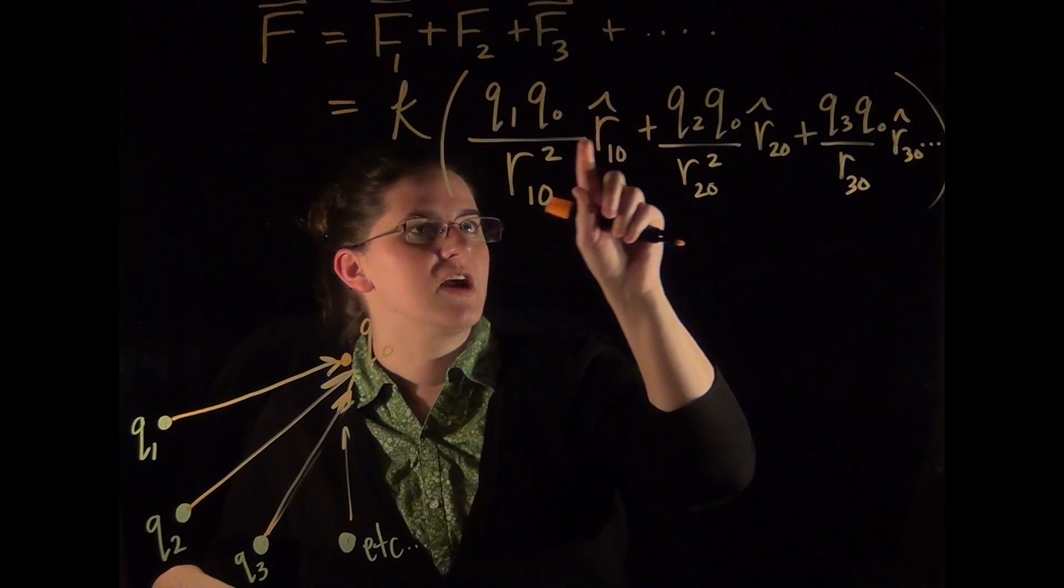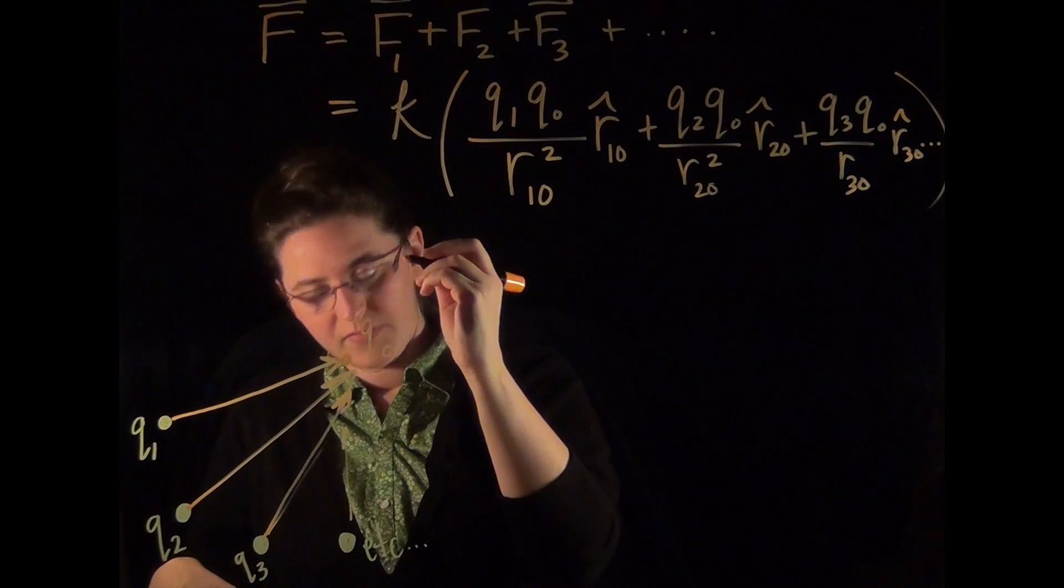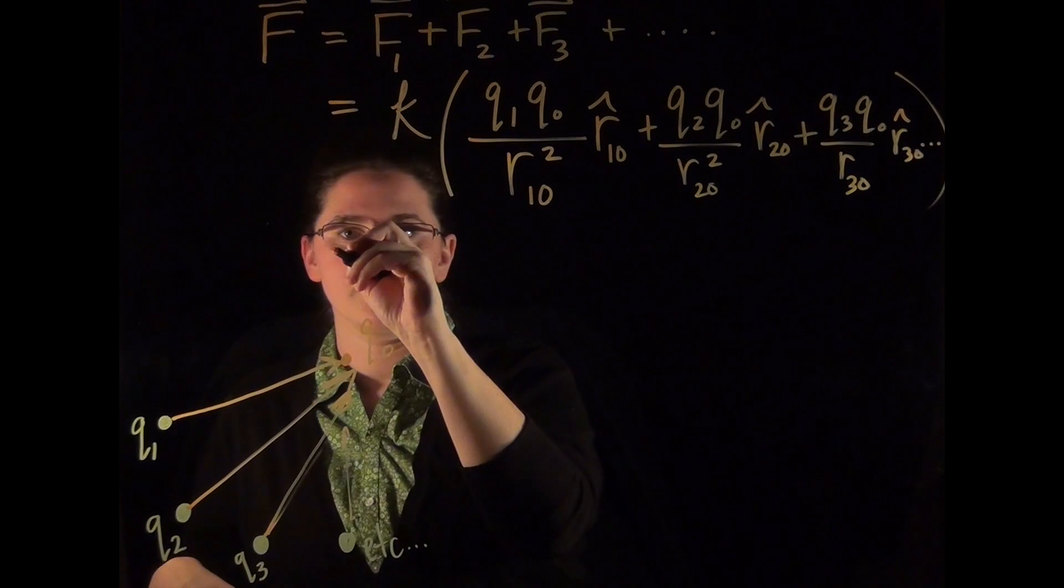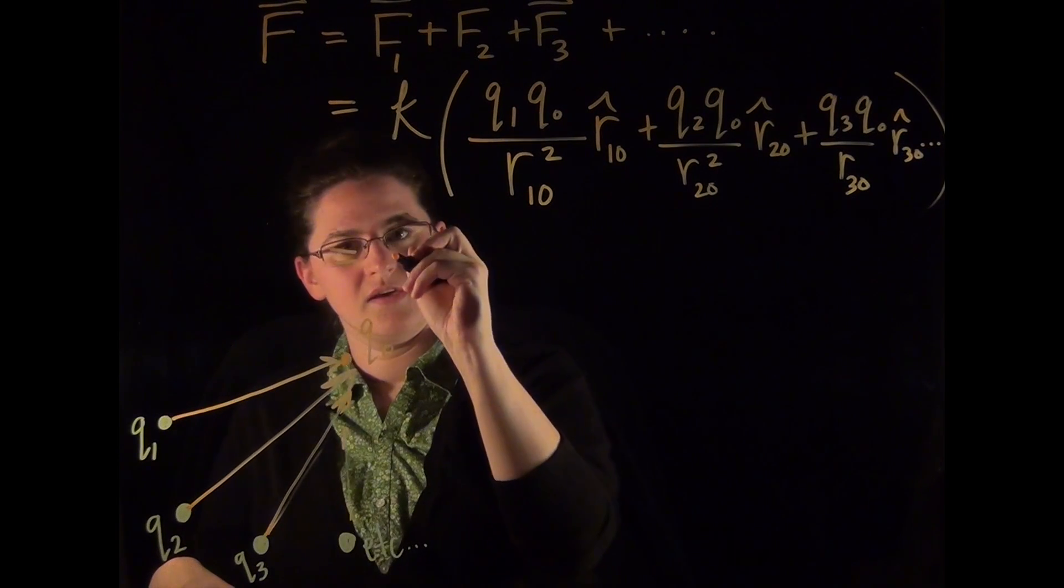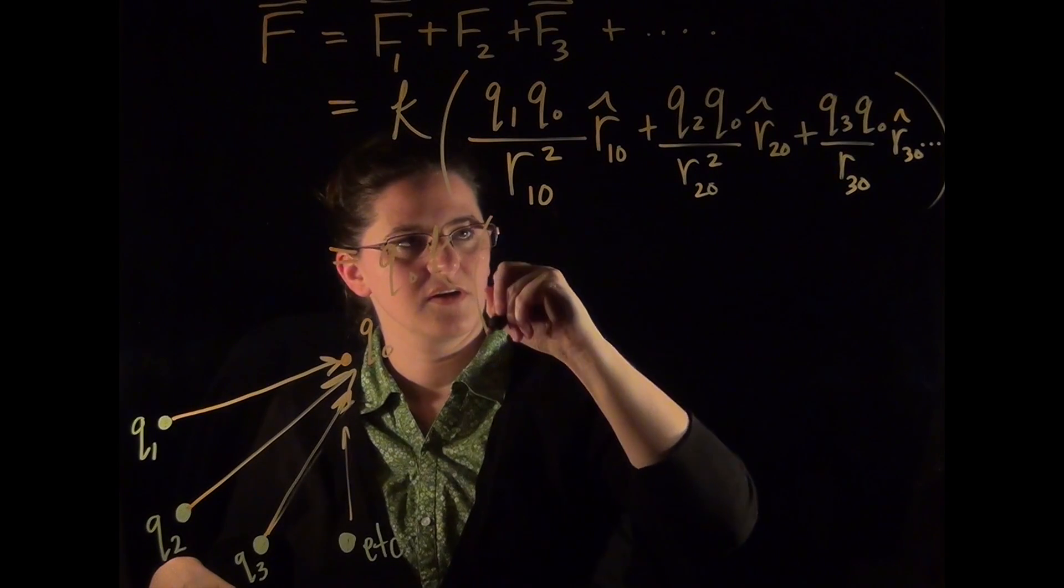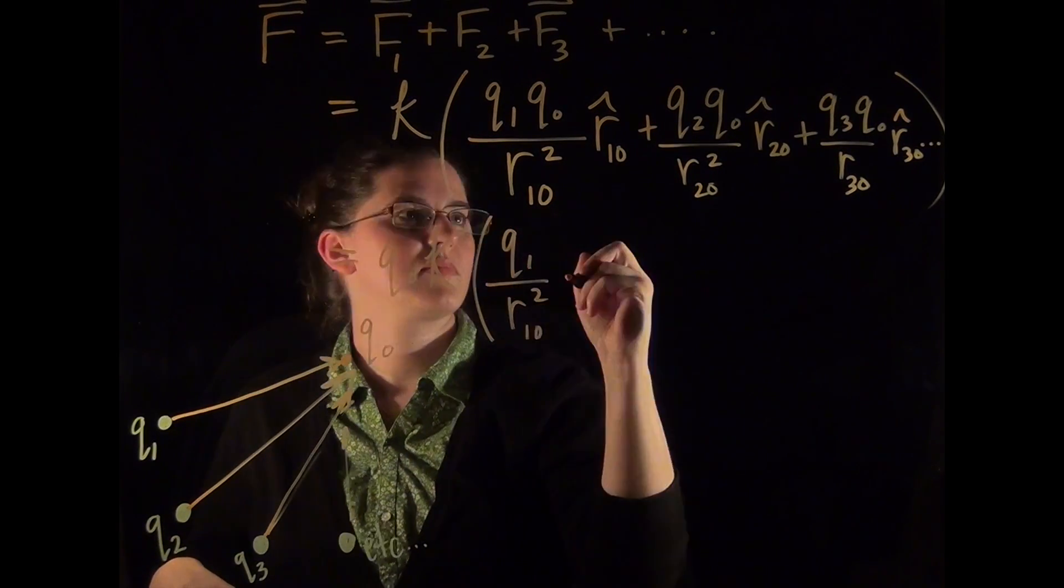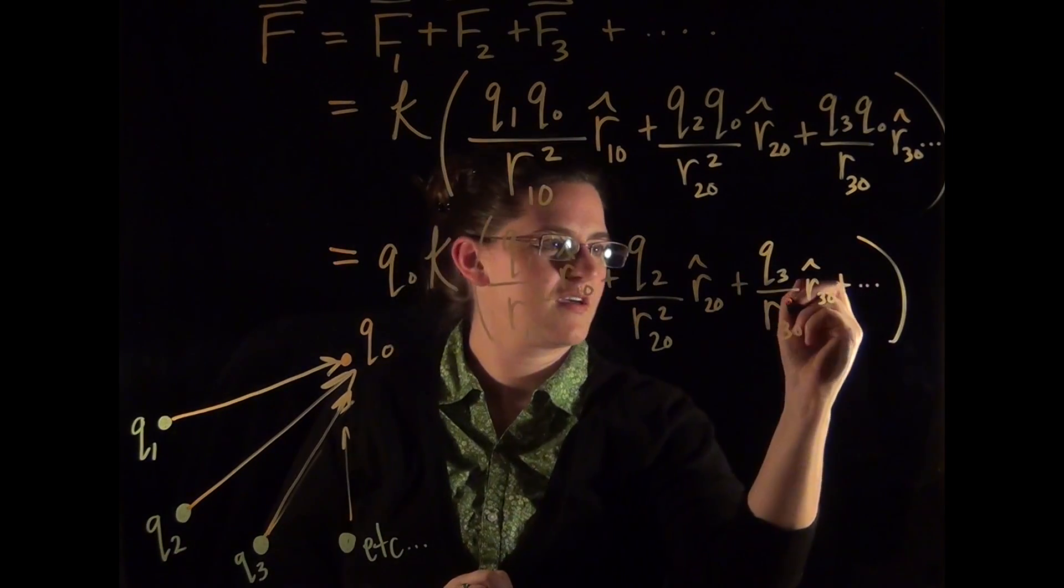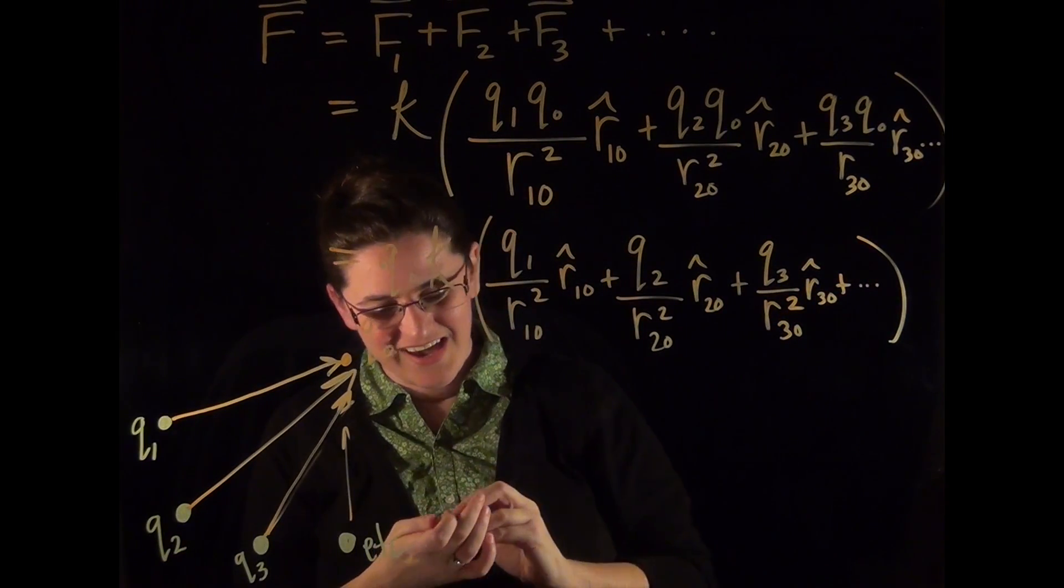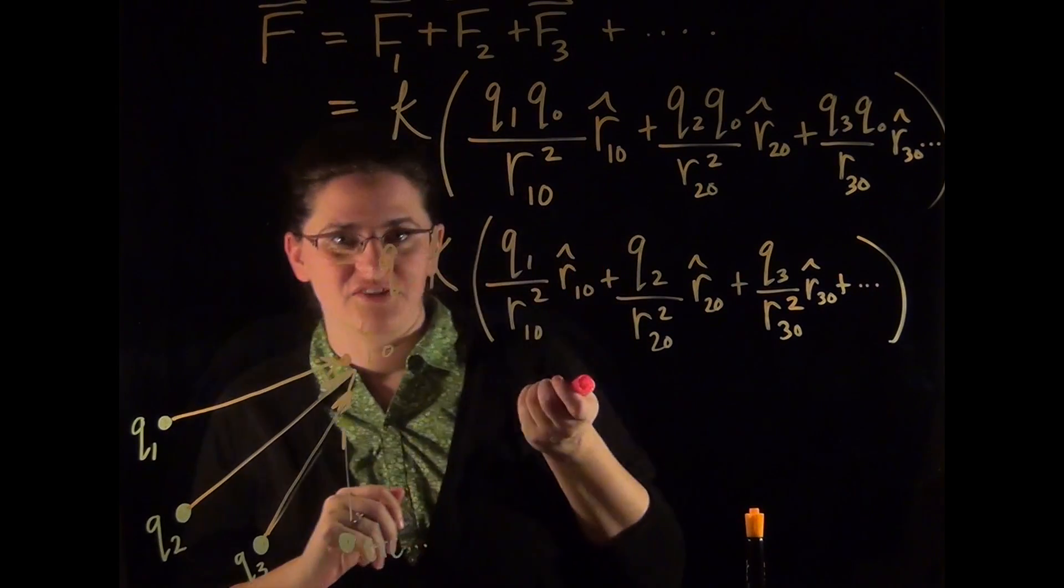So notice that Q0 is in each of these terms, so I'm going to factor out Q0. And we're going to get something that looks like Q0, K, with terms here, Q1. And now we've got something that looks a little bit more like the electric field.